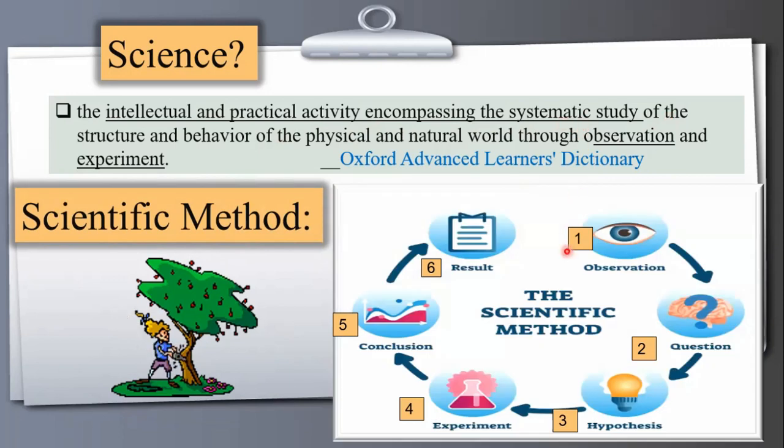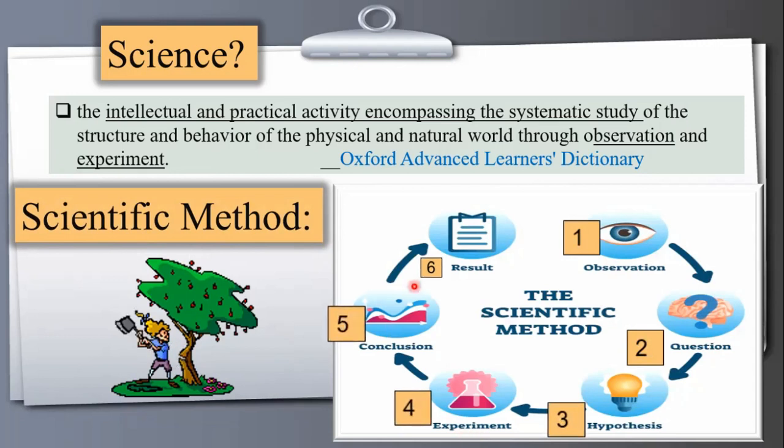What is the scientific method? The systematic study, this systematic history begins from step number one to six. These are some of the systematic ways how we conduct a scientific study. Before going to start, this is our first step: observation. Number two, questions a researcher has. Number three is hypothesis, then experiment, number five conclusion, and number six results.